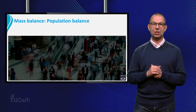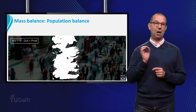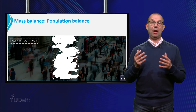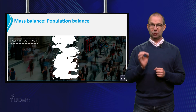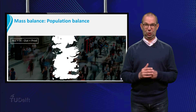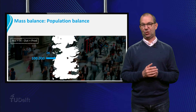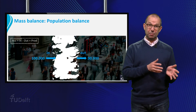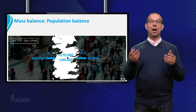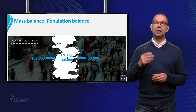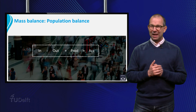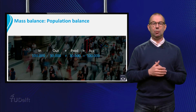To illustrate how we set up and use balances, we will look at the population of a country. To think about inflow and outflow, we must clearly define the boundaries of the country, which define the boundaries of our system. In this example, we assume that each year 100 thousand people enter the country and 30 thousand people leave the country, giving the inflow and outflow. 170 thousand babies are born and 140 thousand people pass away, giving a net production of 30 thousand people. This balance shows that each year the population of the country grows by 100 thousand people.